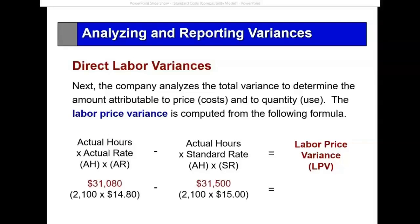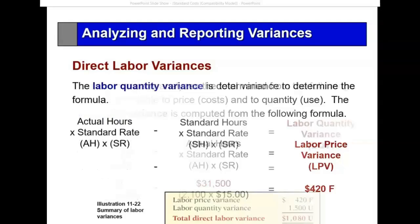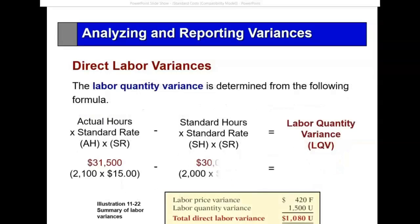The price variance is $420 favorable because we paid less than the standard rate. However, the quantity variance is $1,500 unfavorable. So the total variance of $1,080 masks the fact that we used more labor than we should have in producing this. Was it because of the material we purchased or control over the labor costs? It would certainly bear looking into.